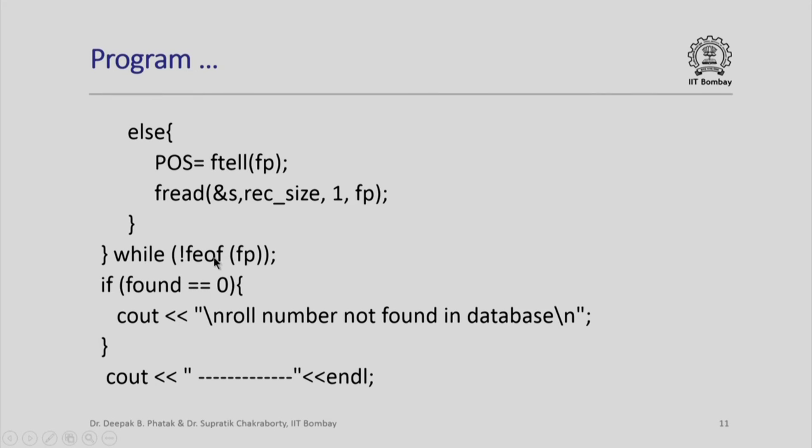What is the condition of the while loop? While not end of file of fp. Notice that I could have used the while loop, I am using do-while loop here, but both serve exactly the same purpose. If at the end the roll number was not there in the file at all, then I will know it because found will still remain 0, and if found is 0, I will say roll number not found in the database.